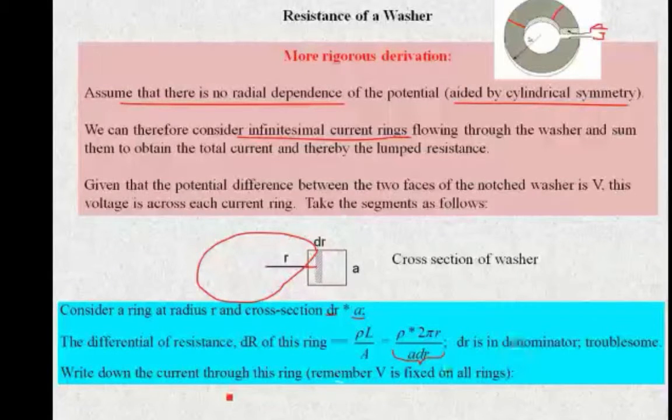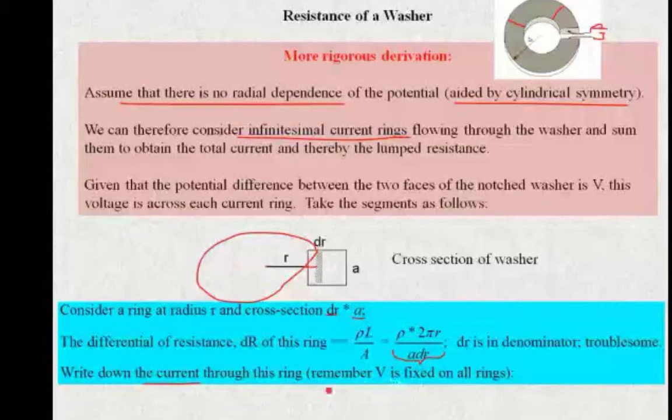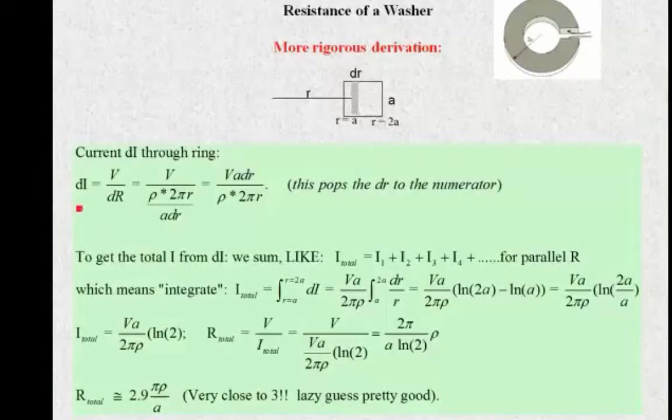This is a little strange because our differential is in the denominator, so that's a little bit troubling. Well, we can get out of that by writing down the current through this ring. So we've got V fixed on all the rings. So here's the i with the voltage over dR. And notice what happens when we take this and put it in. This is dr down here. The dr will pop up into the numerator, so we have a dr here and a di here, which is ideal for integrating.